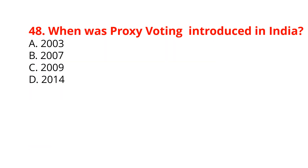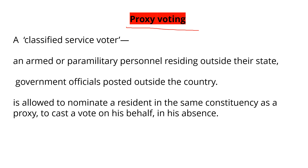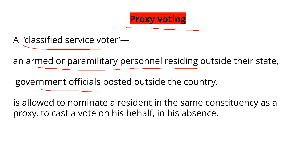When was proxy voting introduced in India? It was introduced in 2003. A classified service voter is allowed to nominate a resident in the same constituency as a proxy to cast a vote on his behalf in his absence.